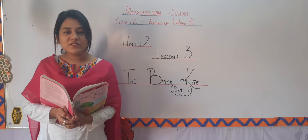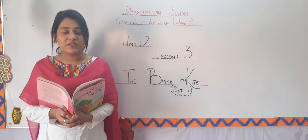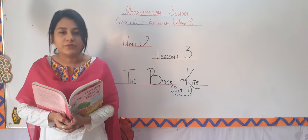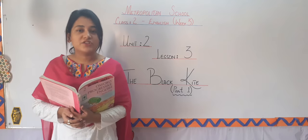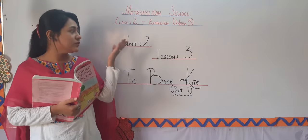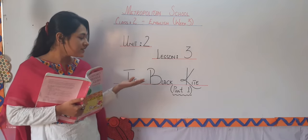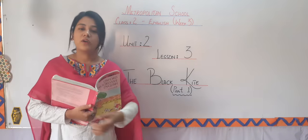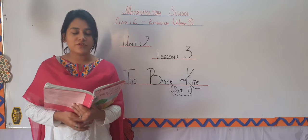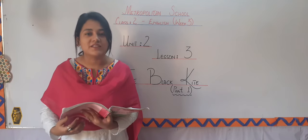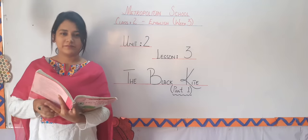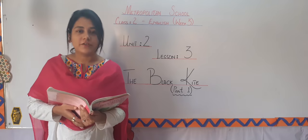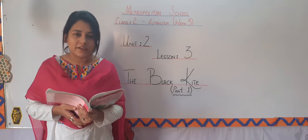So my dear students, as we are done with unit number 1, let's move forward and start our unit number 2. Today we are going to read unit 2, lesson 3, which is 'The Black Kites,' part 1. So hurry up, grab your books, and open page number 12 so that we can start reading.